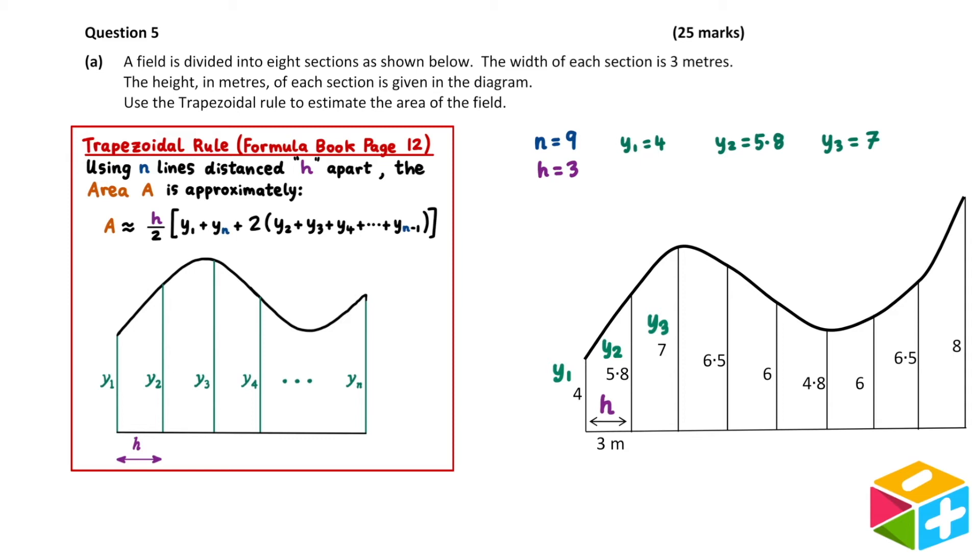The labellings of the rest of the y values follow in a similar pattern. y4 is the height of the fourth vertical line, y5 is the height of the fifth vertical line, and so on.